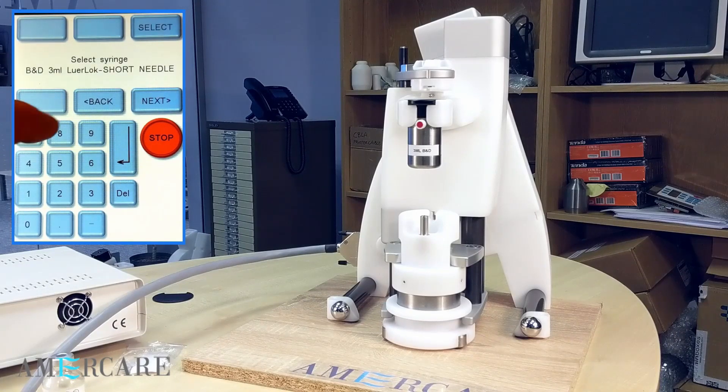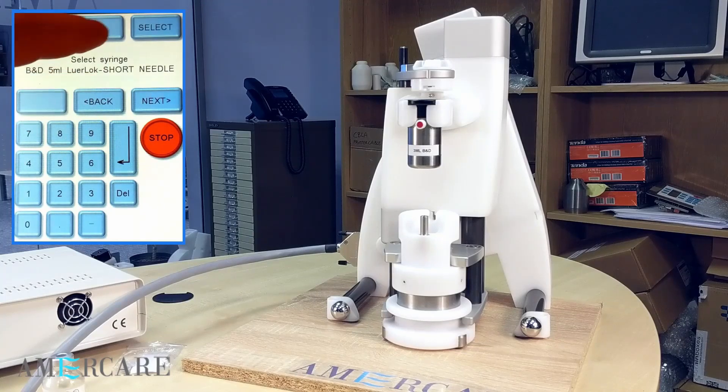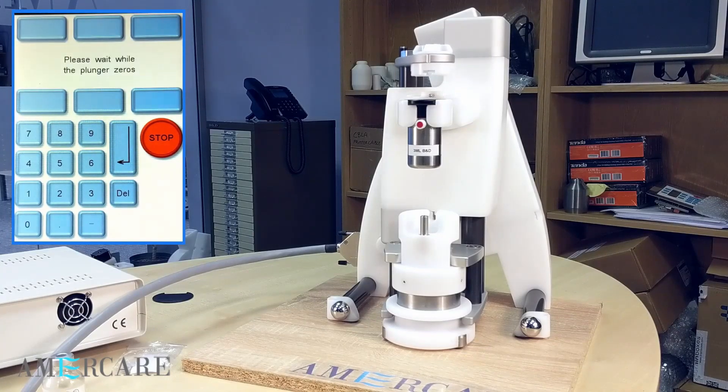Press back or next to move through the available syringes. Once the required syringe is shown, then press select. And the unit will now ask to confirm the changes.